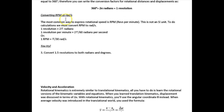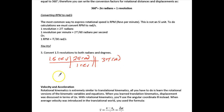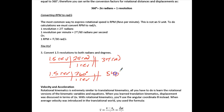Now we're going to convert RPM to radians per second. We need to convert 1.5 revolutions to both radians and degrees. Starting with 1.5 revolutions: multiply by 2π radians per revolution, and we get 3π radians. For degrees, 1.5 revolutions times 360 degrees per revolution gives us 540 degrees.